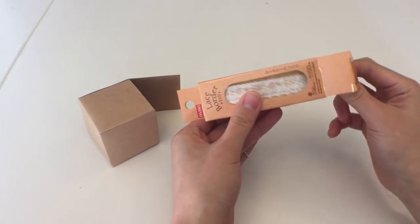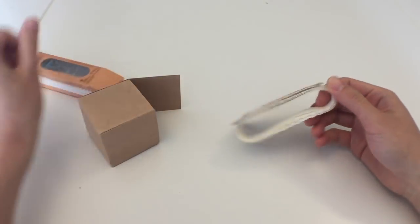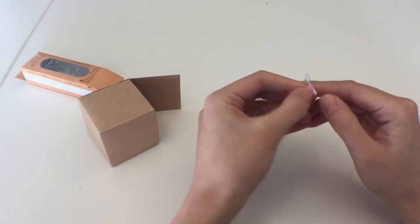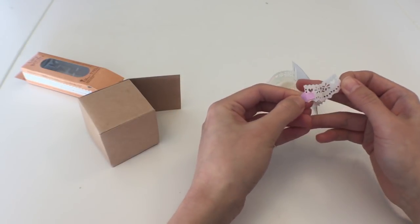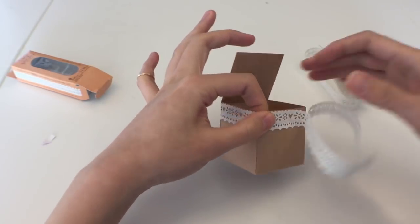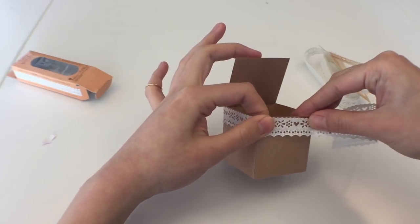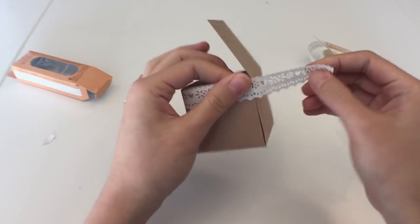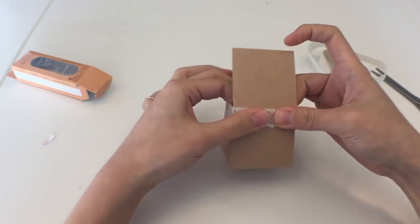To decorate it, I'm using this super beautiful lace washi tape that I got from Japan. It's still brand new because it's so beautiful. I don't want to waste it, but I think it's perfect for this DIY. But if you don't have that, you can definitely decorate it however you want. Place a sticker on it or draw on it. It's really up to you. Take the opportunity to personalize it the way that you want.